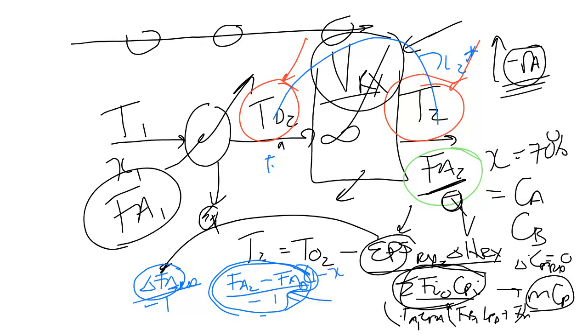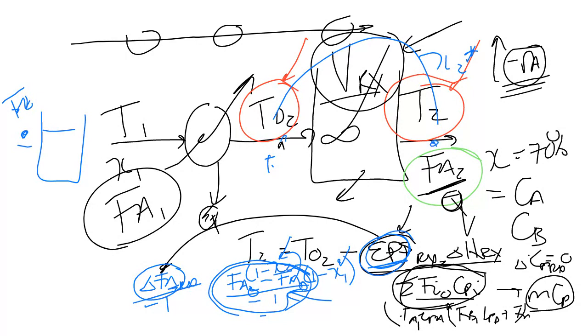When computing the energy balance for reactor 2, make sure your epsilon term uses the molar flow rates as they actually enter and exit that reactor. Now writing the three unknowns for reactor 2: T-naught-2, the operating temperature T2, and volume V2.